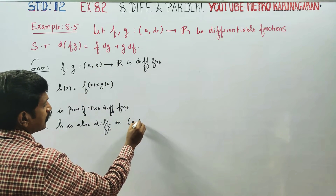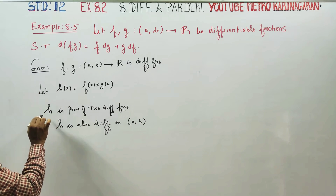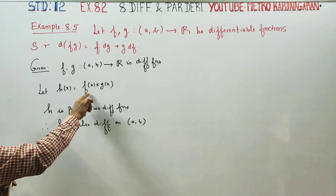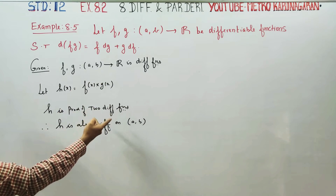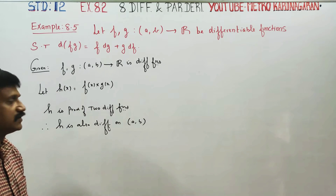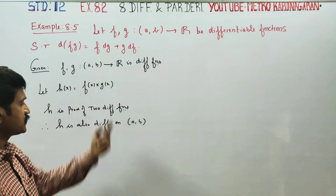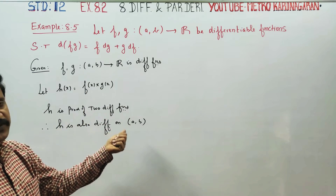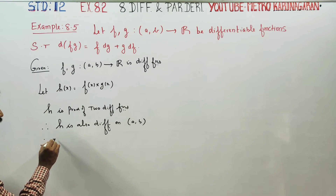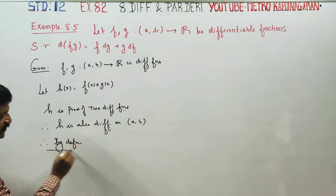In the interval, h is differentiable. f and g are differentiable, and the product of two differentiable functions is again a differentiable function. Therefore, h is also differentiable on [a, b]. By definition, the differential of h is defined.